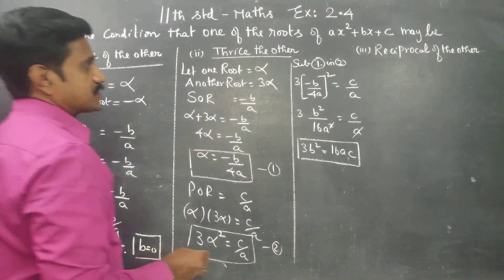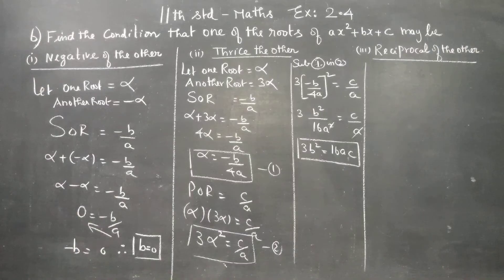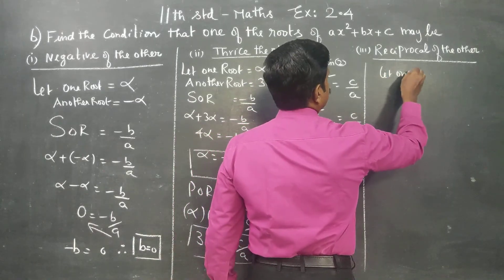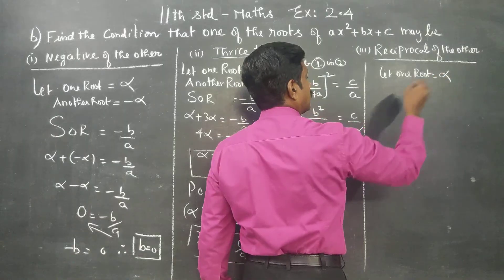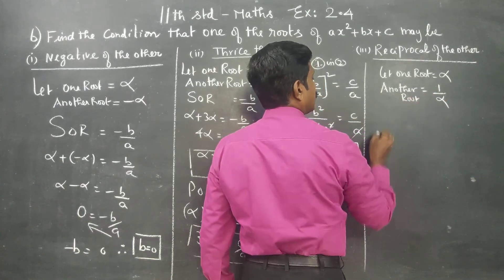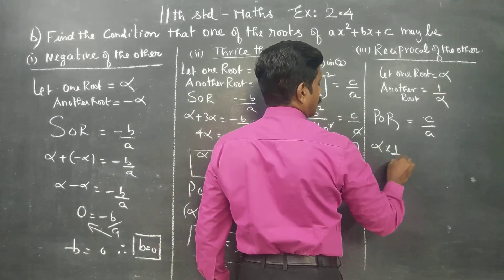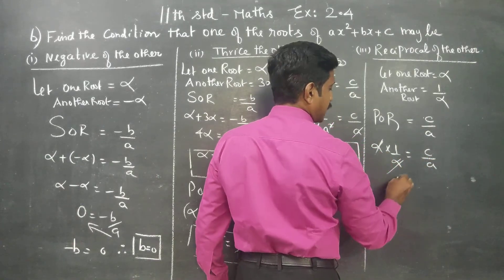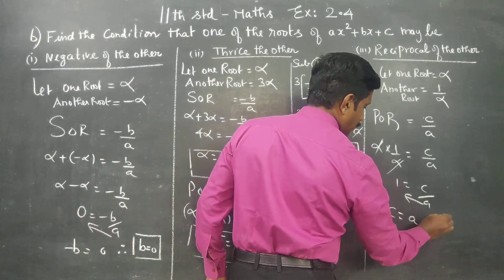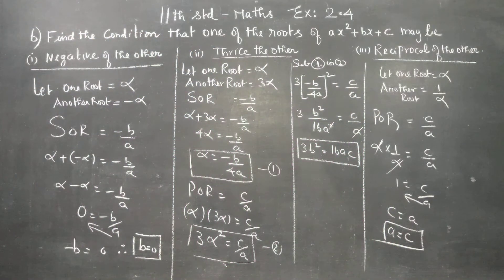Last part: one root is reciprocal of the other. Let one root equal alpha, then another root is 1 by alpha. I am going to use the product of the roots, which is equal to c by a. Alpha into 1 by alpha is equal to c by a. Alpha cancels, giving 1 equal to c by a. Cross multiplying, c is equal to a, or a is equal to c. This is the required condition. Thank you.